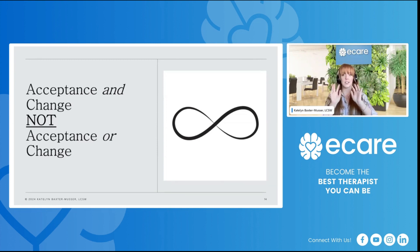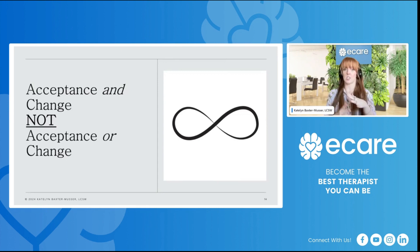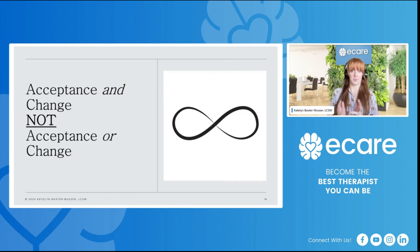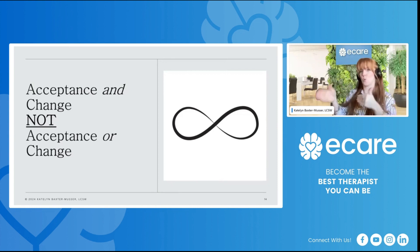Change can only happen within the context of acceptance. Here's a simple example: you're on the side of the road with a flat tire. You can't change the flat tire until you've accepted that you have a flat tire. That's an easy way to highlight this idea — we have to first accept the situation in order to make those changes.